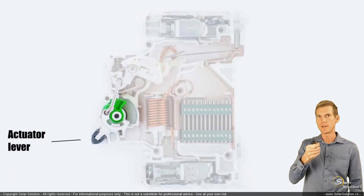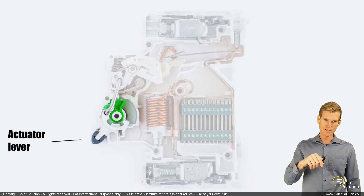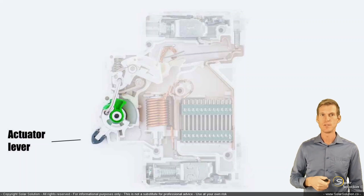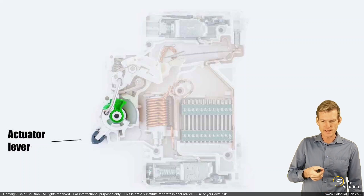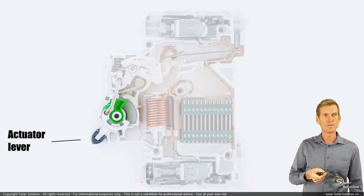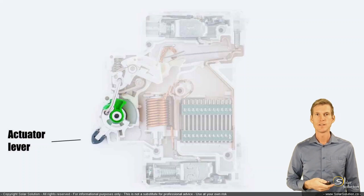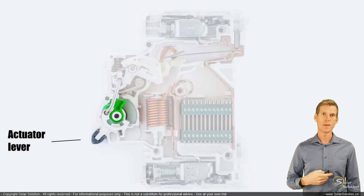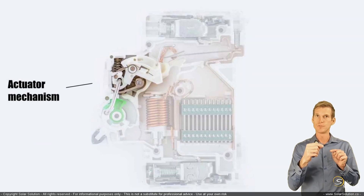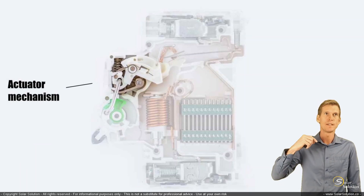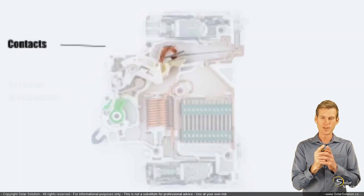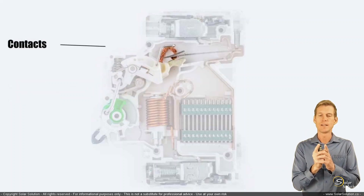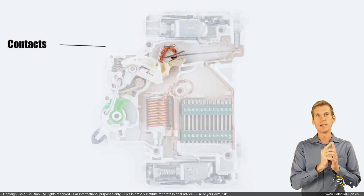The second component is the actuator lever — the point where you can control the breaker, whether it trips by itself or you want to trip it manually. As you control the lever, you feel resistance and then it clicks into place. That's controlled by the actuator mechanism behind the lever, which in turn controls the physical contacts that actually open and break the circuit.